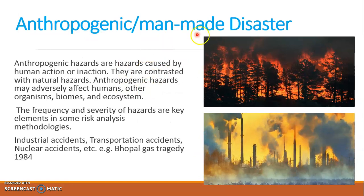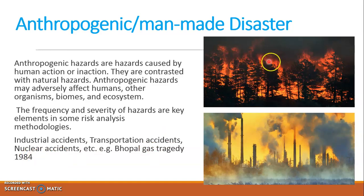Next is anthropogenic or man-made disaster. Anthropogenic disasters are caused by human action or inaction, in contrast with natural hazards. They may adversely affect humans, other organisms, biomes, and ecosystems. Examples are industrial accidents, transportation accidents, and nuclear accidents. The Bhopal gas tragedy of 1984 is a live example from India. In the image, you can see trees in the jungle have been burnt and pollution released by industries — these are called anthropogenic disasters.